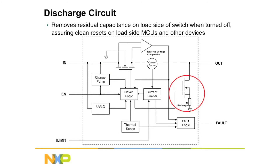Another feature is the discharge circuit. When you turn off the load switch, it takes a long time for that capacitance to go away, and sometimes you don't want that — you want the voltage to go to zero on the output when you turn the switch off. This is where a discharge circuit works: when the switch turns off, a special circuit turns on to discharge the load, giving you a very nice, clean off on the output signal.